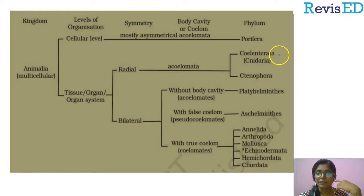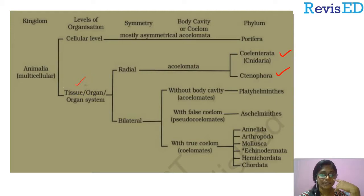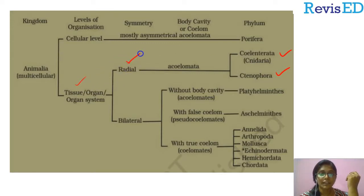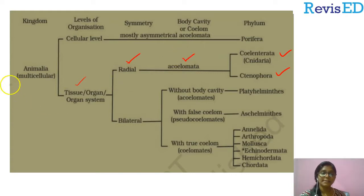Cnidaria and Ctenophora are having tissue level of organization — for example, Cnidaria includes Hydra. They are radially symmetrical in body form and are included in acoelomates.